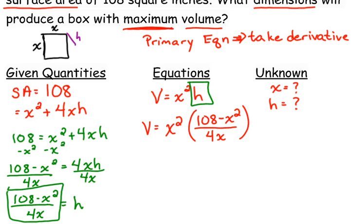So we are going to substitute this expression right here for h in our volume equation. Now we can simplify this a little bit to make life a little bit easier before we take the derivative. What can simplify here? If we're multiplying x squared times that quotient, we can cancel an x. This x in the denominator can cancel with one of those.